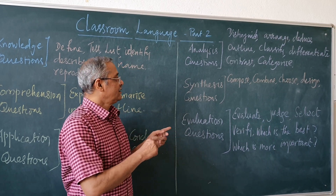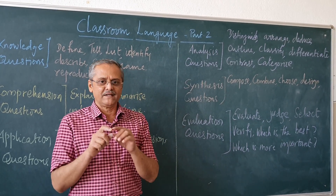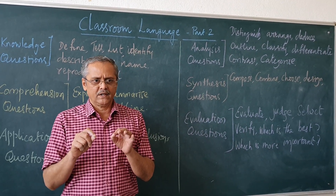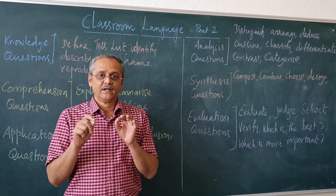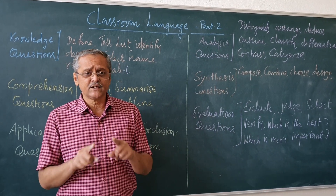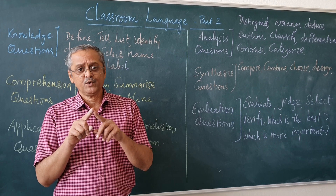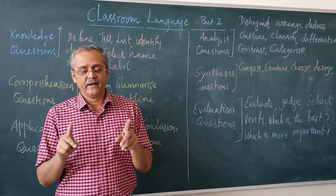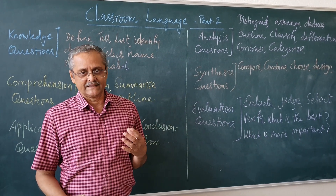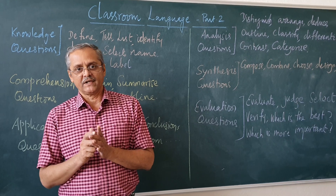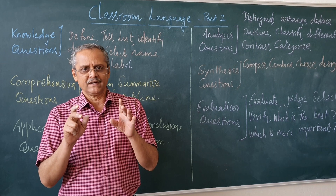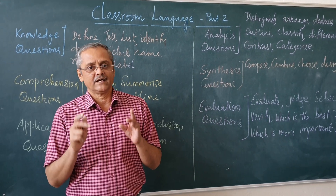Now, as a continuation, let us see what are the basic classroom language structures we should have so that a minimum level of English learning takes place in class. My concern here is particularly for non-second-language-using areas, rural areas, and remote places where teachers are not getting exposure or training. How can we use minimum-level language in the classroom so that communication takes place in English?